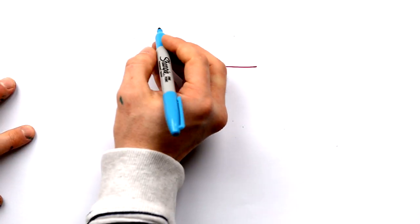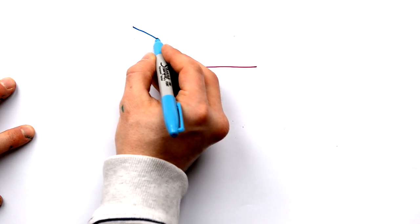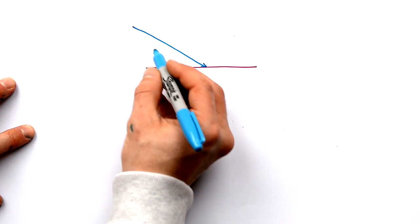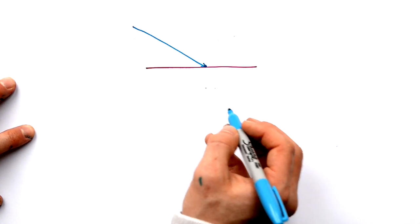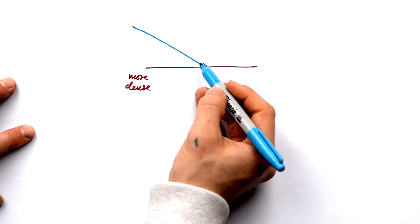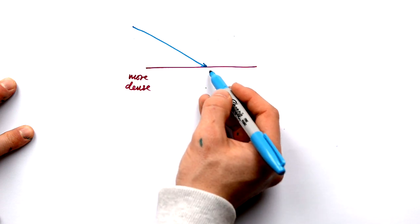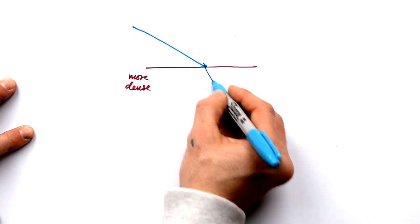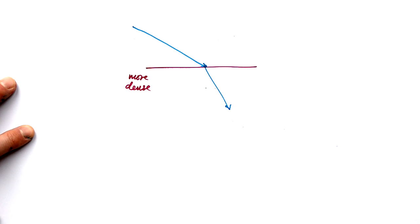Newton loved particles. He hated waves, and he thought that he could explain refraction by talking about a particle coming in, and then it reaches a more dense medium. As it crosses that boundary, it's accelerated by the more dense material. So he thought he could explain it using particles.